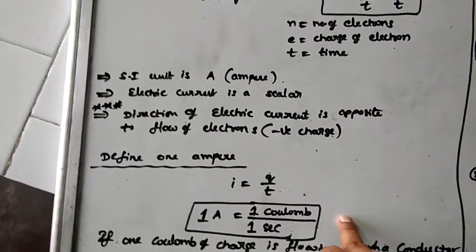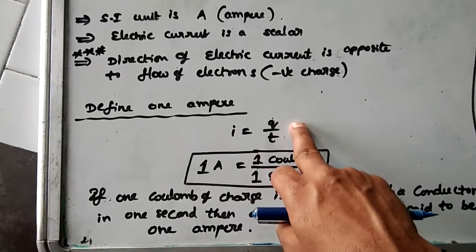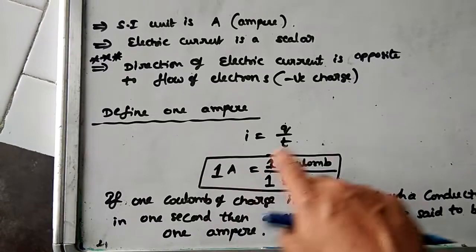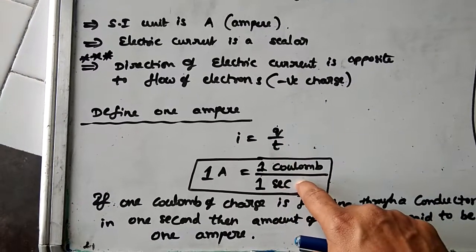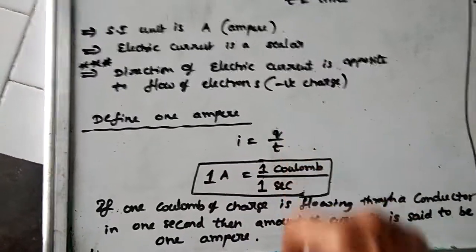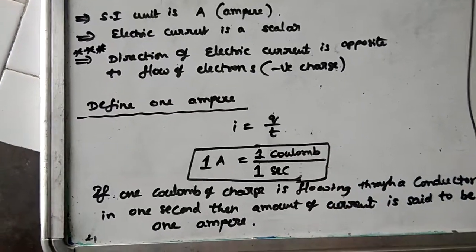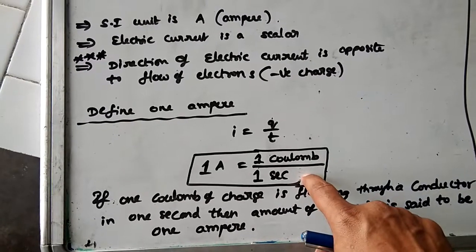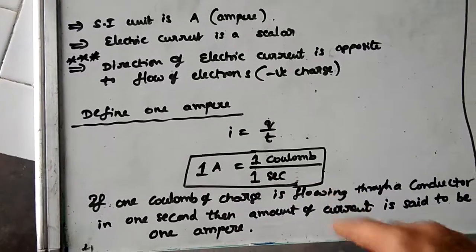One important definition you must know: define 1 ampere. Using I = Q/T — if current is 1 ampere, charge is 1 coulomb, and time is 1 second — 1 coulomb of charge flowing through a conductor in 1 second means the amount of current is said to be 1 ampere.